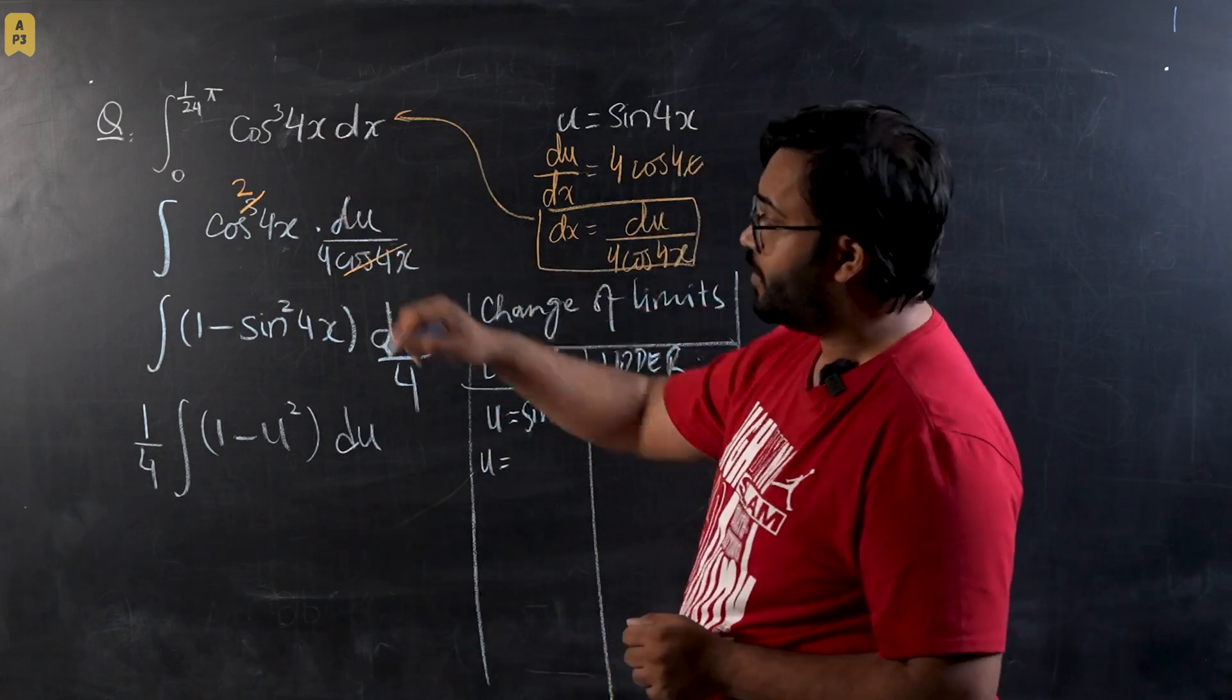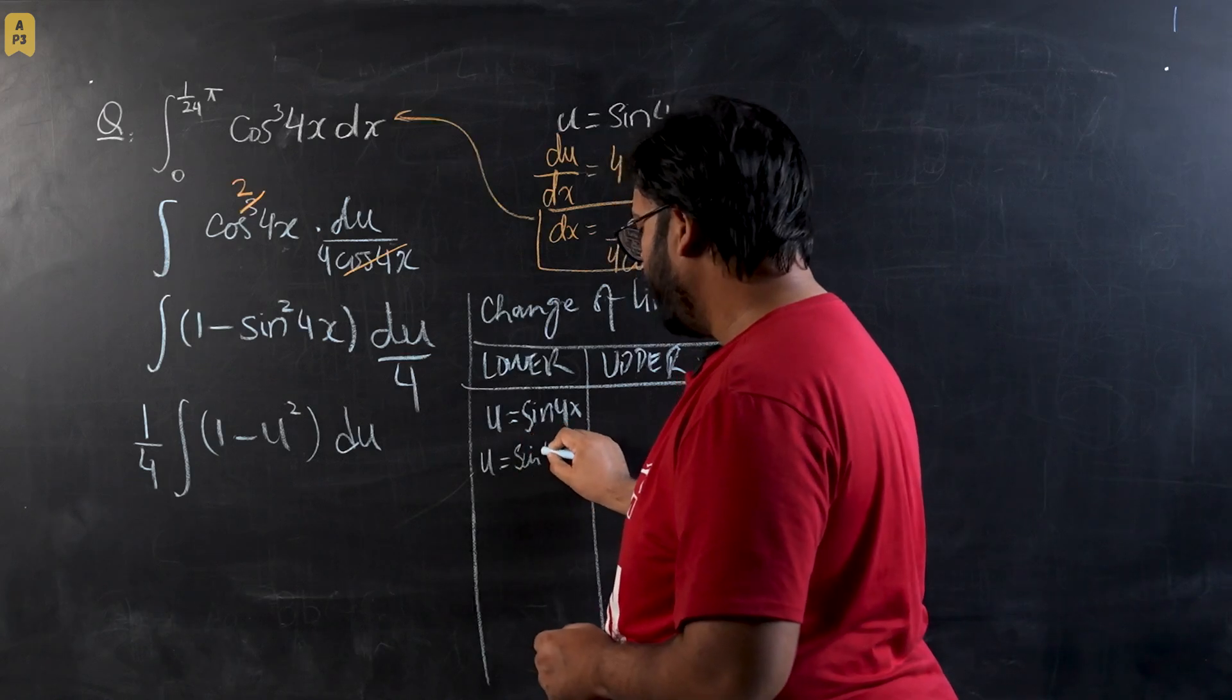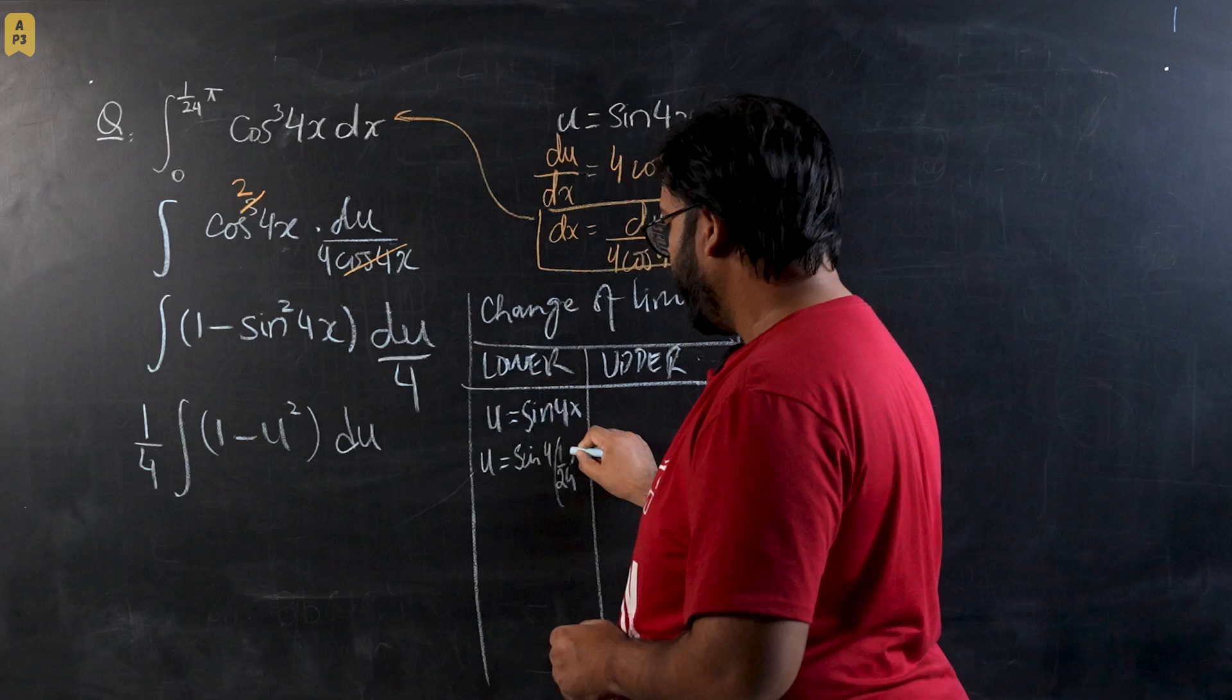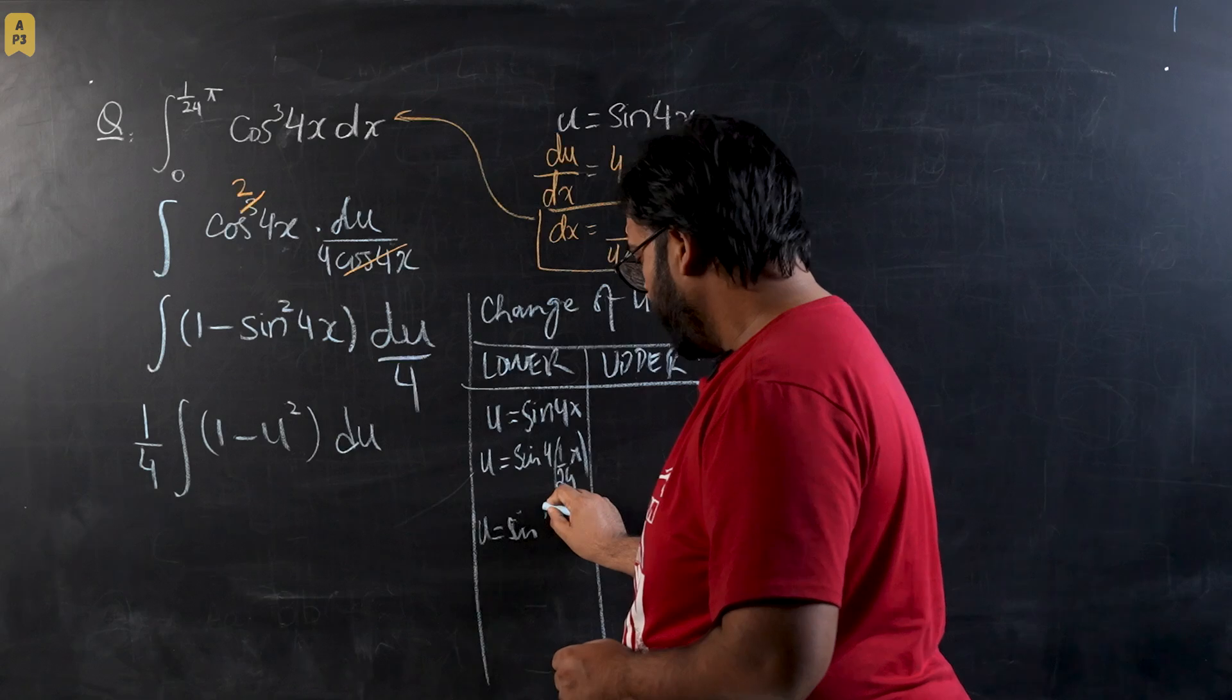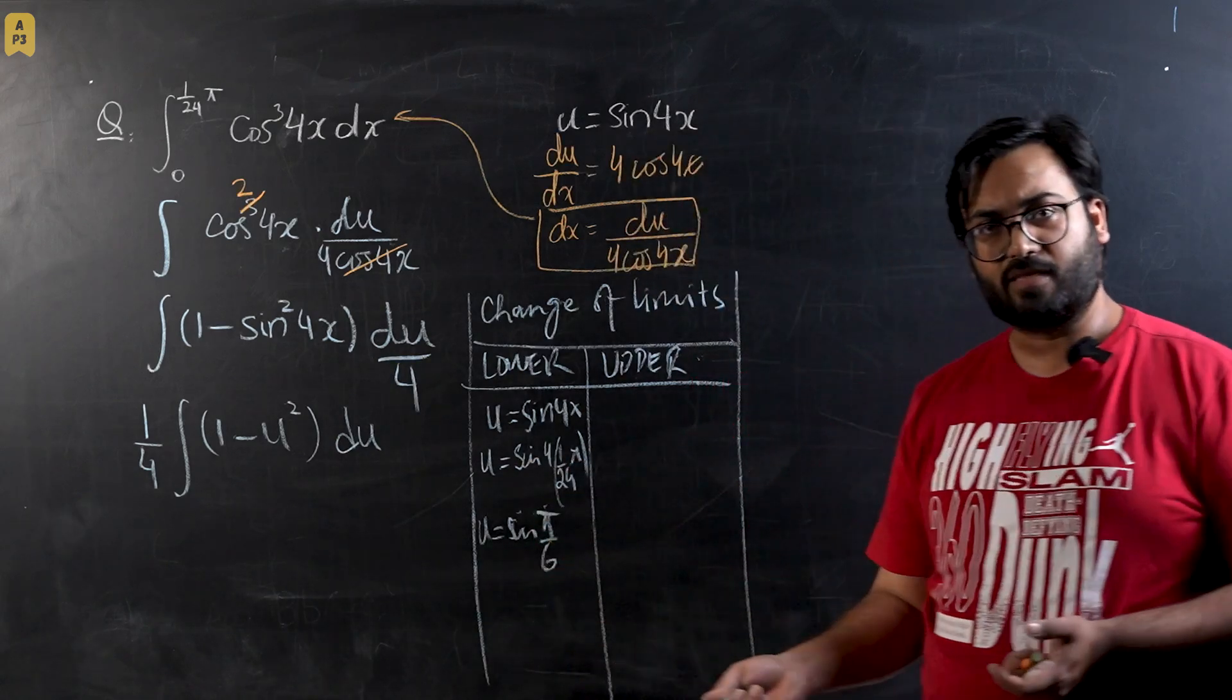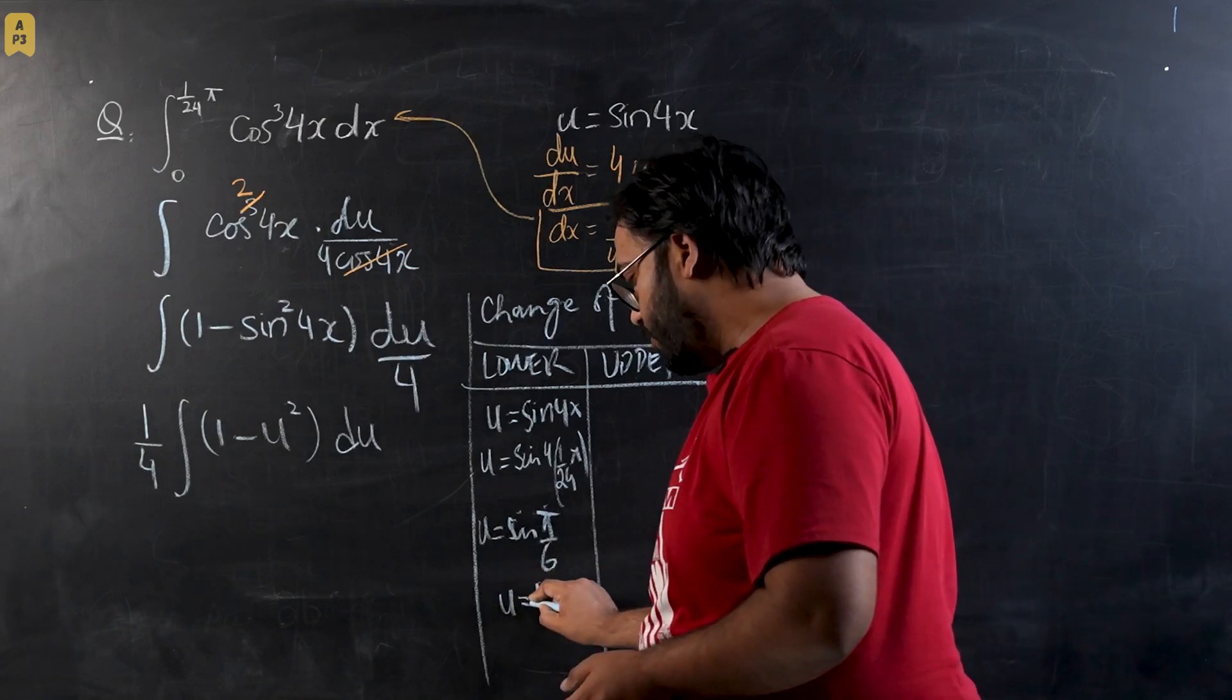For the upper limit, I'm going to write u = sin 4x and u will be equal to upper limit as 1/24π, so sin(4 × 1/24π), so this will be u = sin(π/6). We know that π/6 is 30 degrees and sin 30 is 1/2, so upper limit would be u = 1/2.